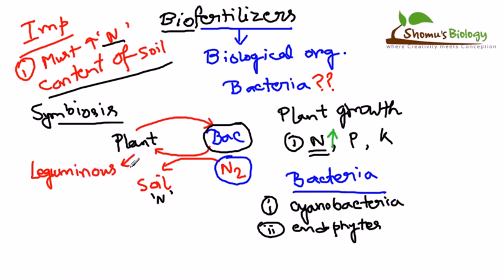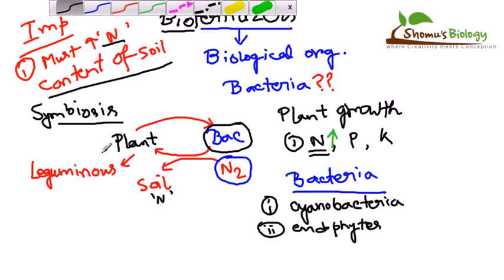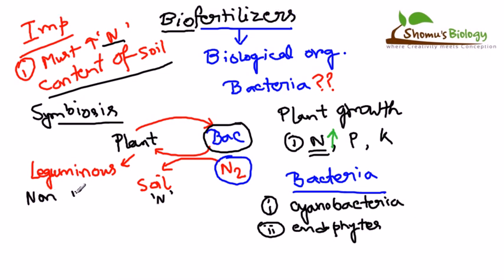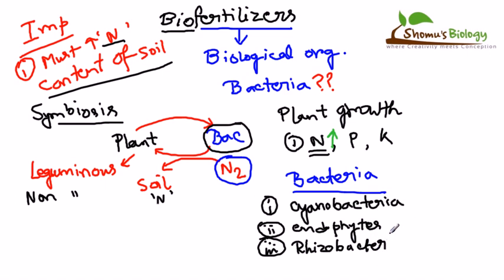There are also plants that do not carry nitrogen-fixing bacteria; these are called non-leguminous plants, and they are present in a higher percentage. Bacteria present in leguminous plants that can fix nitrogen include cyanobacteria and also other bacteria such as Rhizobacter — named so because they are present in the rhizosphere.